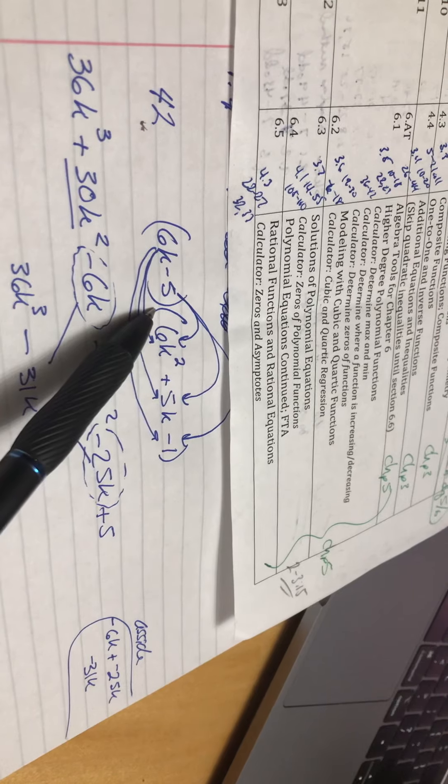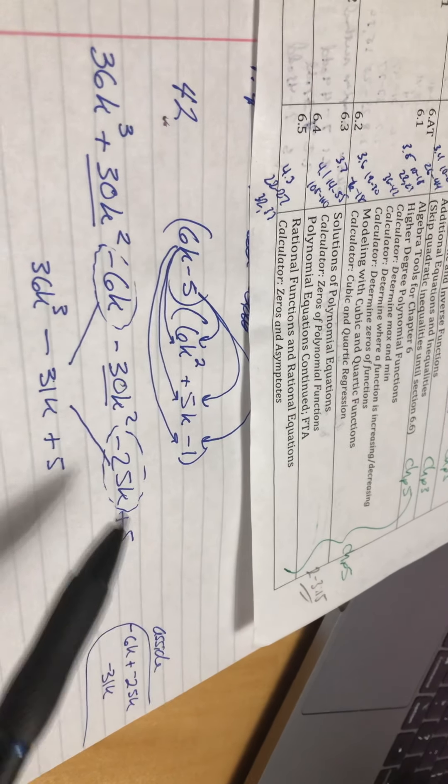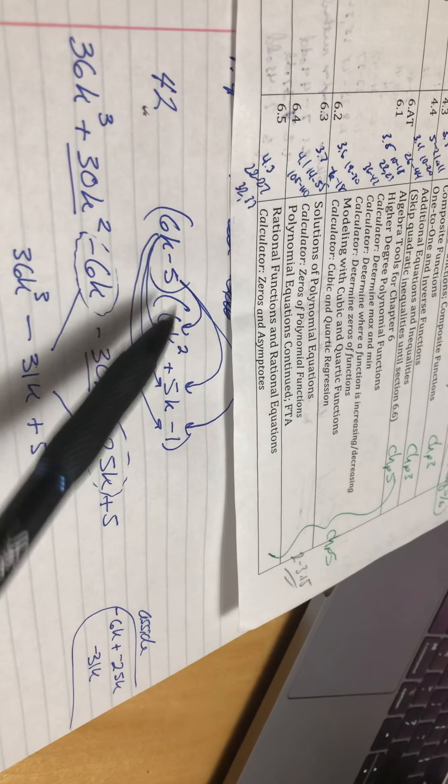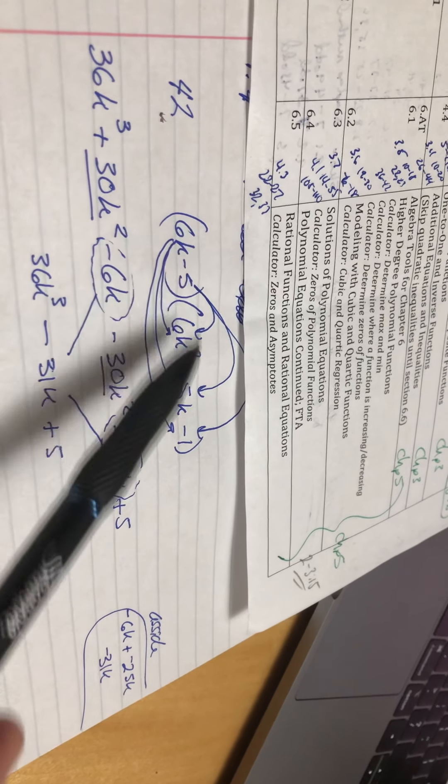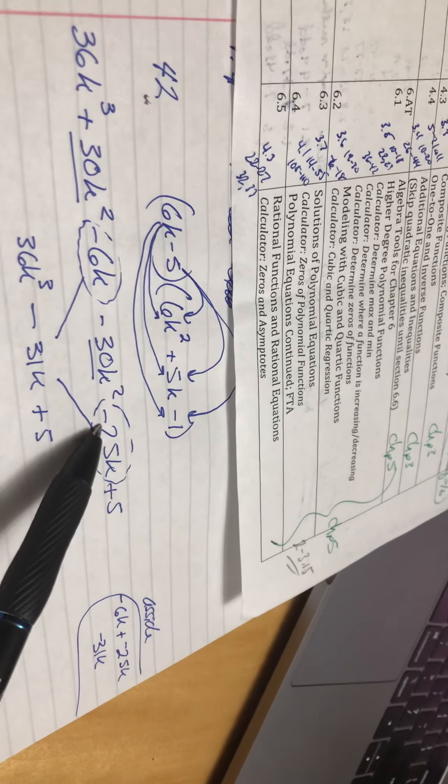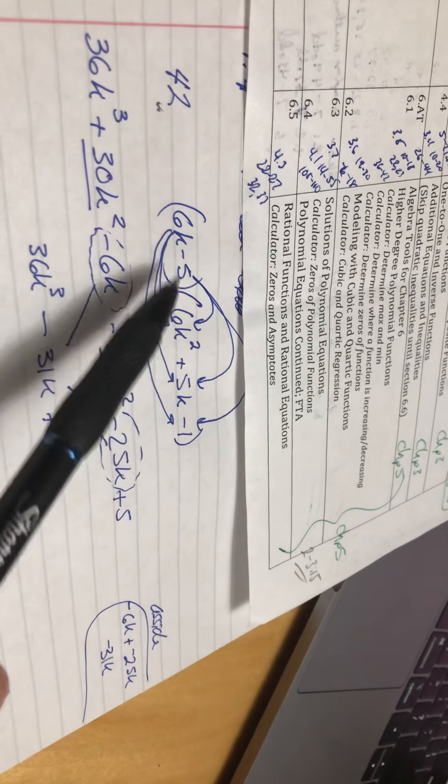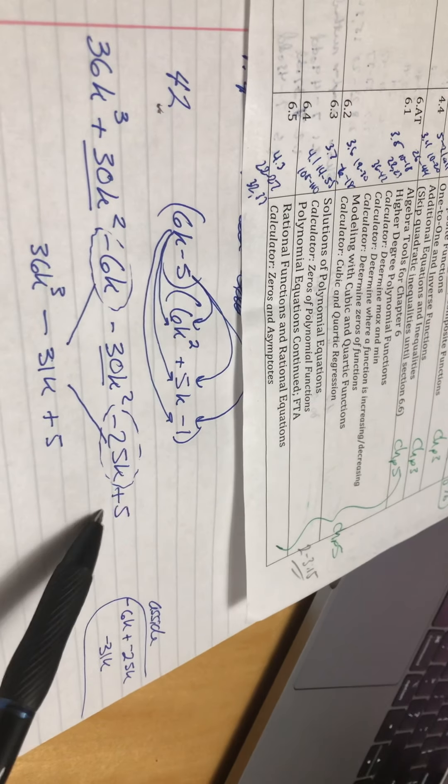It doesn't have a match so it's just k squared. Then negative 5 times positive 5k is a negative. You're taking a negative times a positive and you're getting negative 25k. And then negative 5 times negative 1 is a positive 5.